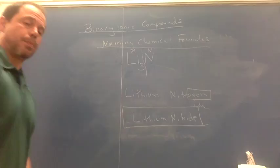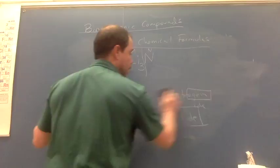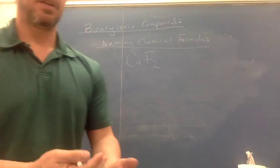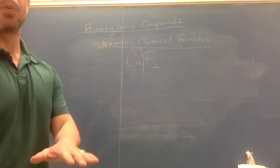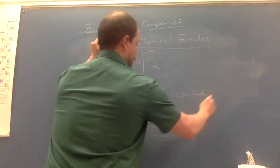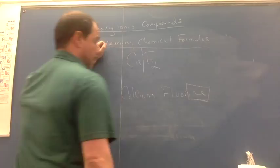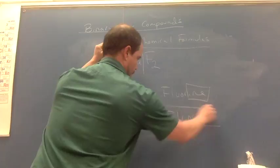Let's do CaF₂. We have calcium and fluorine. Calcium is the metal — write its name as is: calcium. Fluorine is the non-metal; find the ending '-ine', drop it, and change it to '-ide', giving fluoride. The name is calcium fluoride.